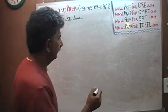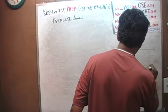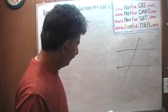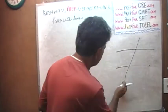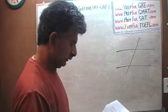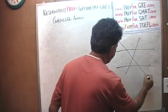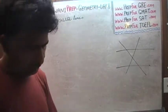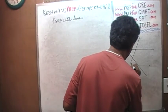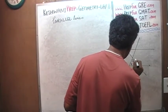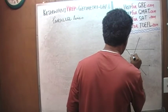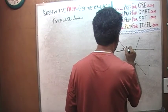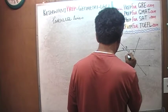Here are two parallel lines, and then it is being intersected by a third line like this. We are given angles: angle 1, 2, 3, 4, 5, 6, 7, 8.